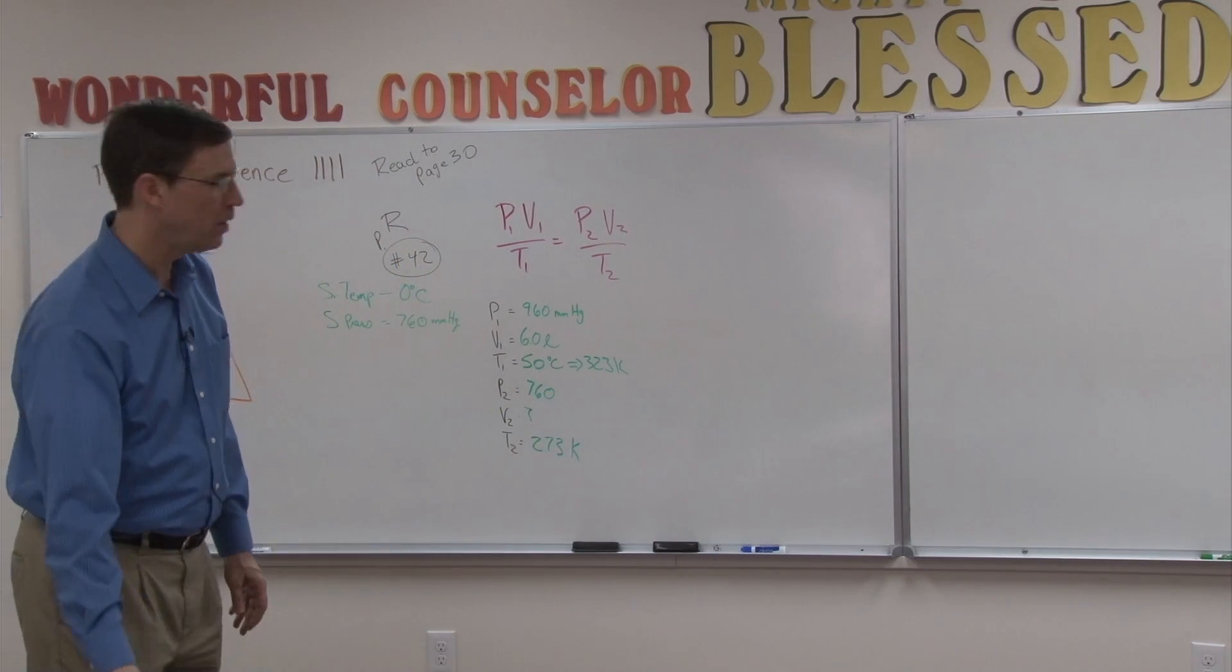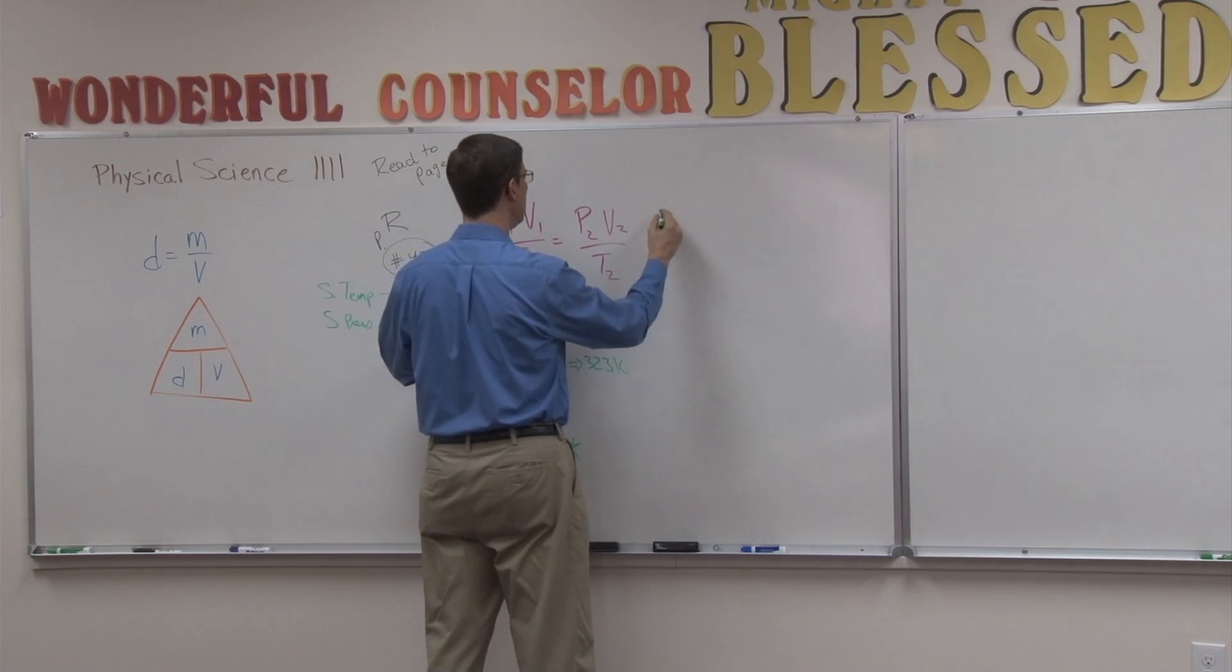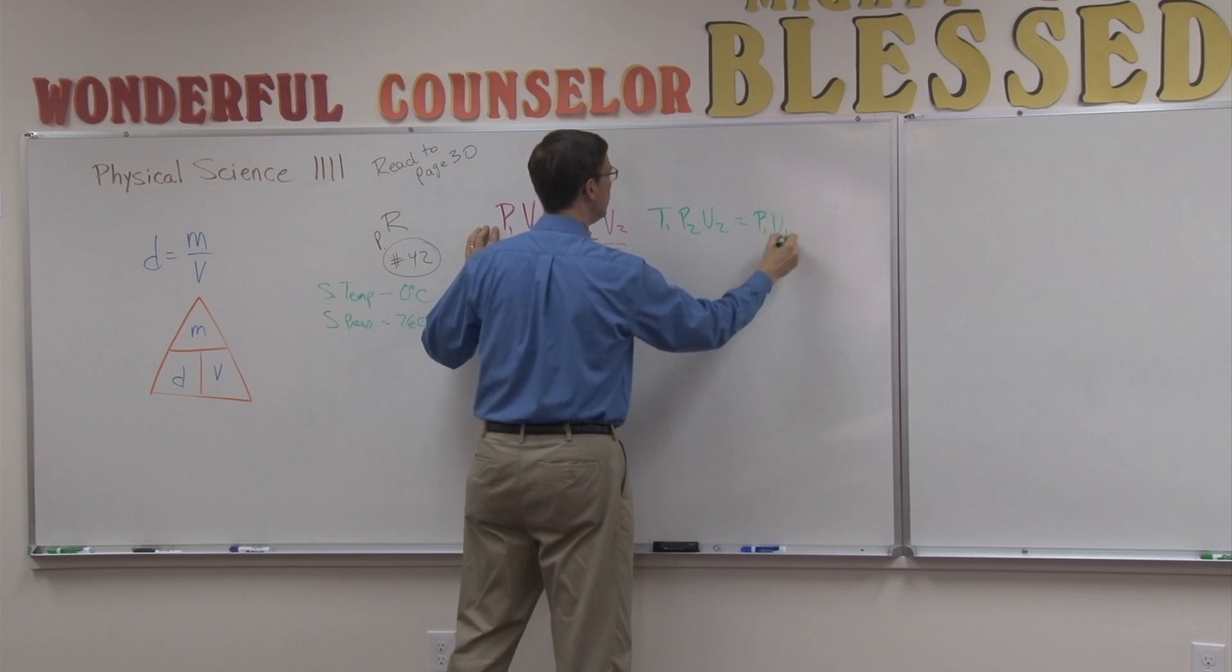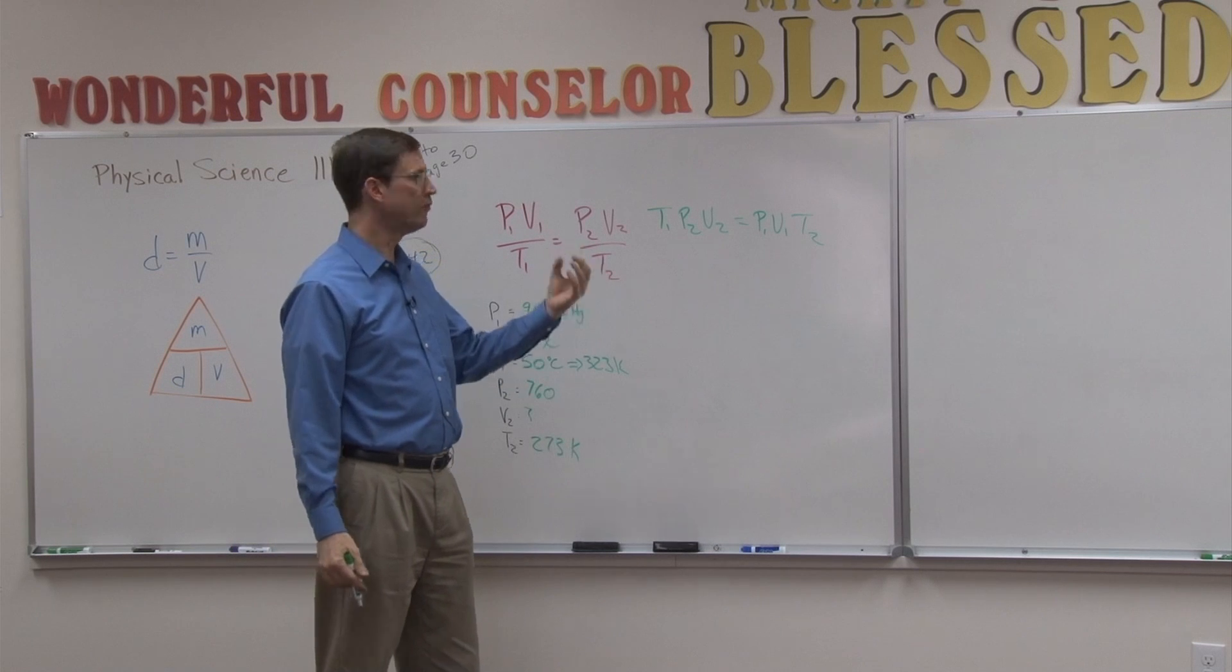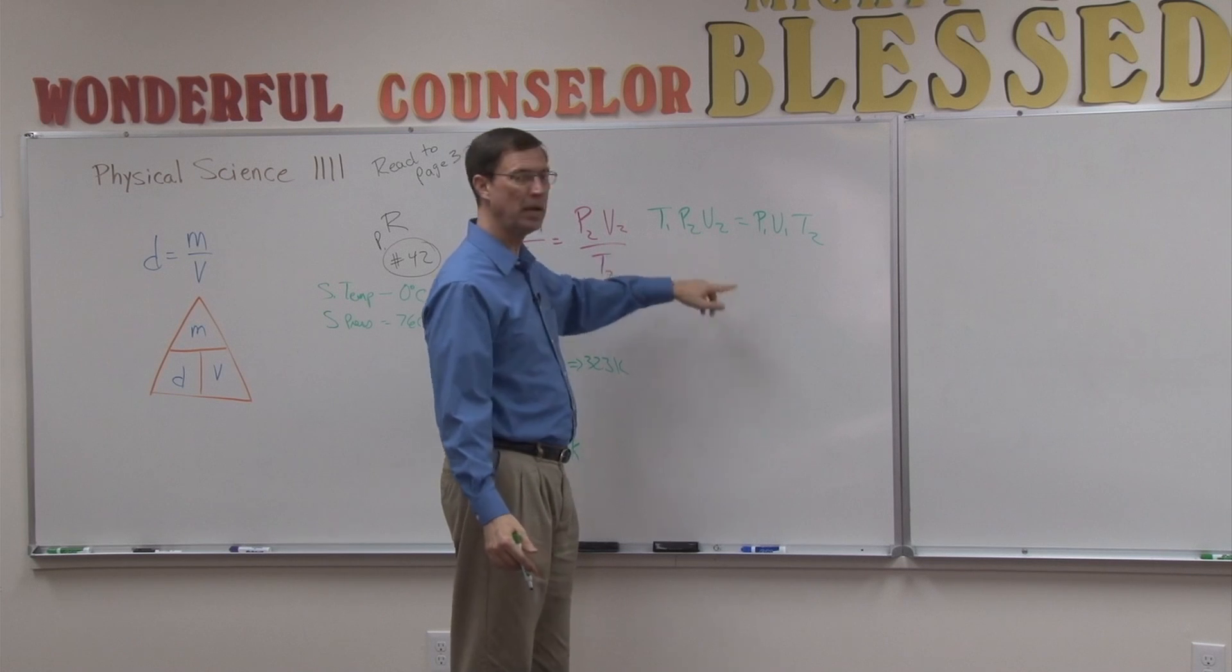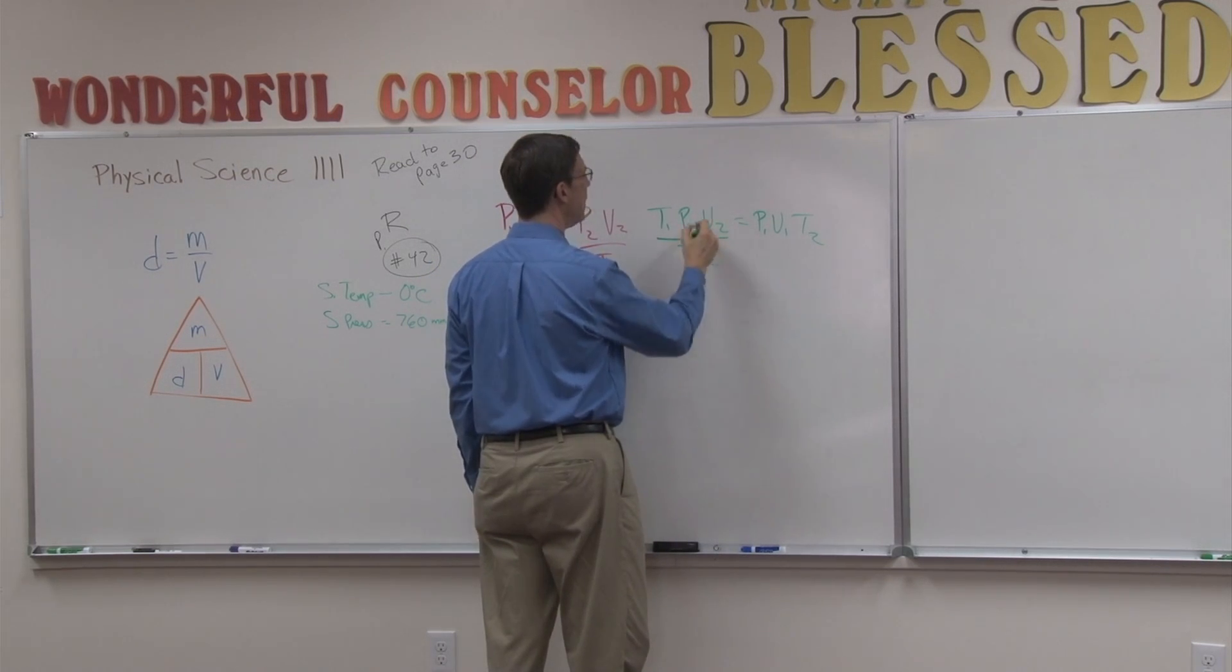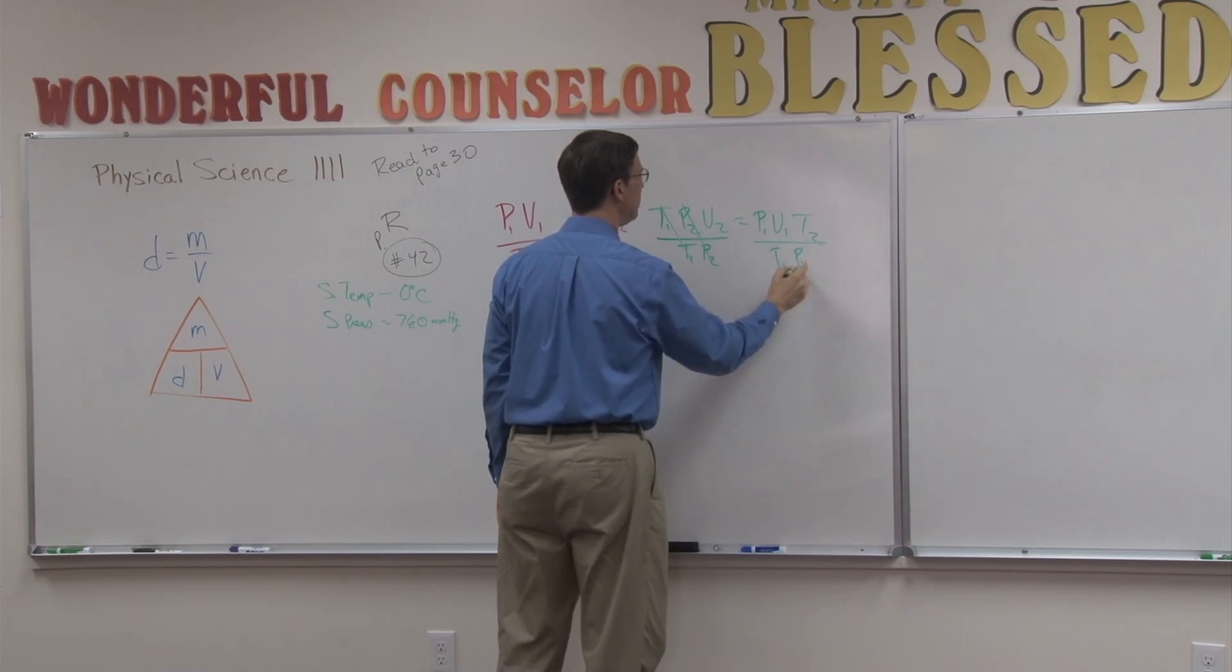All right, so we have all of the numbers that we need. And now we've just got to figure out an equation to solve this. Okay, so I'm going to start by cross-multiplying T1 P2 V2 equals P1 V1 T2. And then again, thinking back to algebra 1, to solve for one quantity here, I have to get rid of these. Because they're being multiplied, I have to undo multiplication with division, doing the opposite. So I'm going to divide by T1, and divide by P2, and I'll do the same thing over here, T1 and P2.